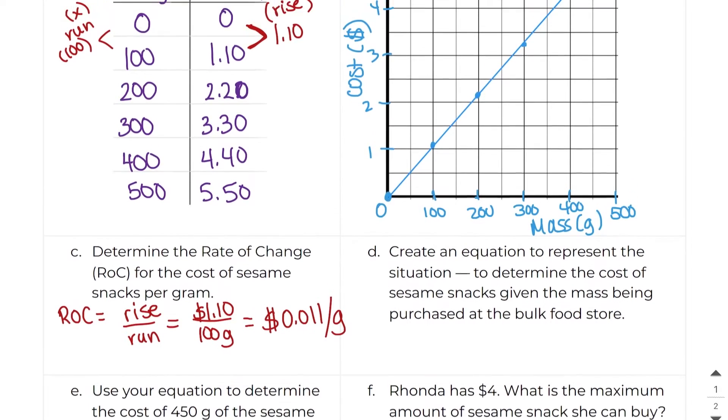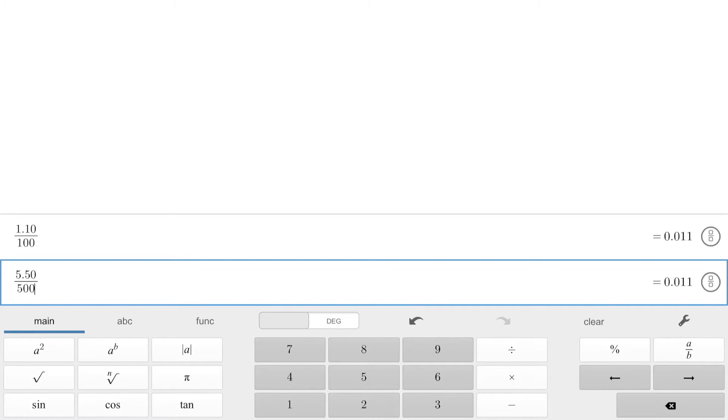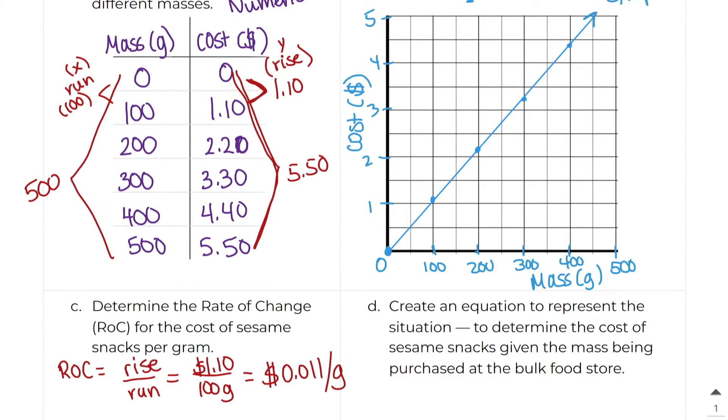Another option that we have is we could do the rise over the run right here. We can see here that the rise is $5.50. Here the run is 500 grams. Let's go ahead and divide those two numbers. I still get that 0.011. And you can choose any starting point, any ending point. It's up to you, and you'll still get the right answer if you do it correctly.